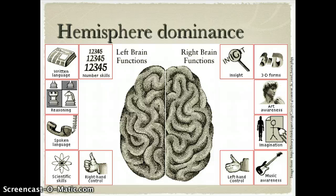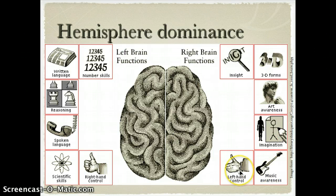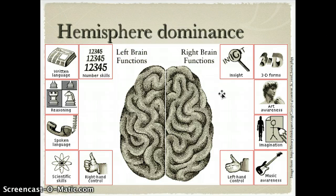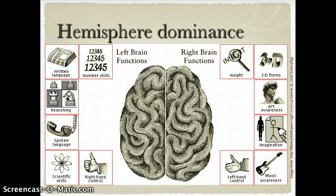When we talk about our left and right brain, we talk in terms of hemisphere dominance. Have you ever heard somebody say 'I'm a right brain person' or 'I'm a left brain person'? Different hemispheres are more dominant in certain people. Our right brain processes insight, 3D forms, art awareness, imagination, and music awareness, and it controls the left side of our body. The left brain is really about spoken and written language, reasoning, number skills, and scientific skills.